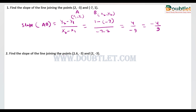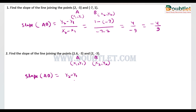Now we need to find the slope for the second example. Again, this is point A and point B. We rename the coordinates as x1, y1 and x2, y2. Using the formula y2 minus y1 divided by x2 minus x1, we get minus 3 minus (minus 3) divided by 2 minus 1.6. Since the numerator terms are the same, slope will be zero.